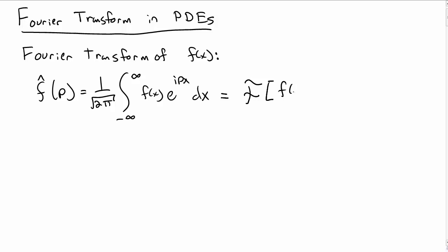Another notation that we'll use for this is curly F square brackets f of x, and this is just another notation for what is called the Fourier transform of f of x, and we'll use this notation a bit.